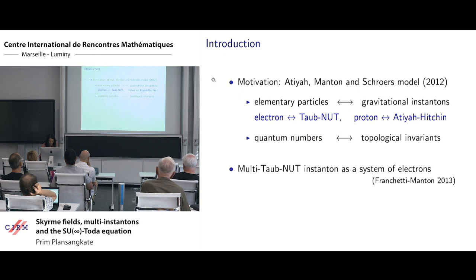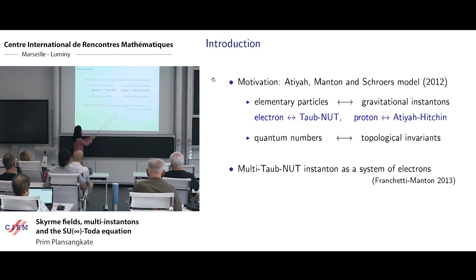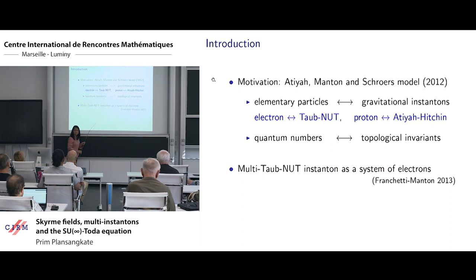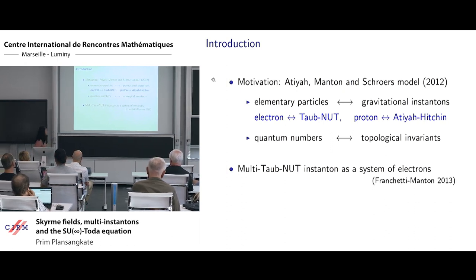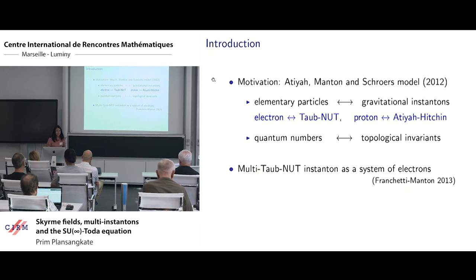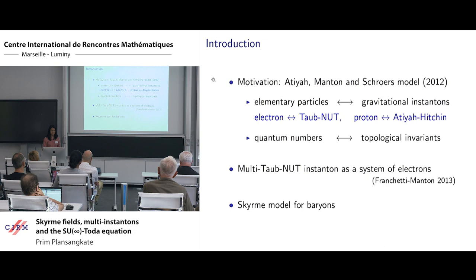The quantum numbers of particles are identified with the topological invariants. Afterwards, Franchetti and Manton extended this model and gave a description of a system of electrons by the multi-Taub-NUT instanton.